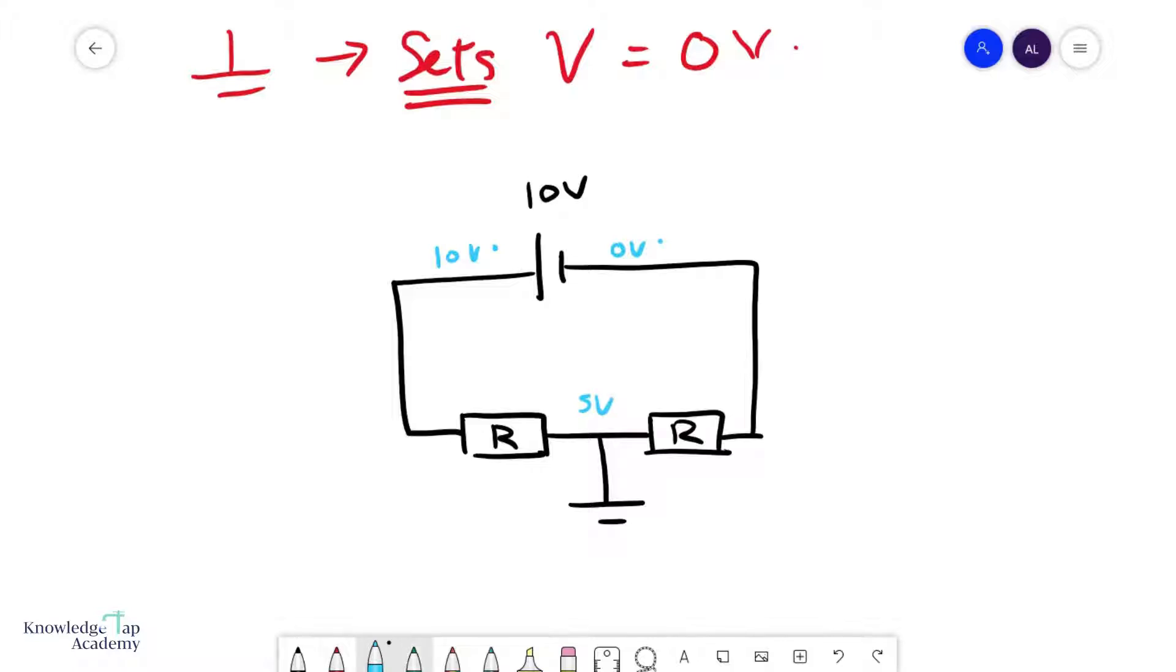So effectively, what we are doing is as we cross from here to here, we gain 10 volts. Cross from here to here, you minus 5. Cross from here to here, you minus 5.